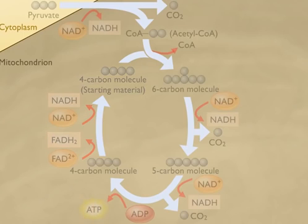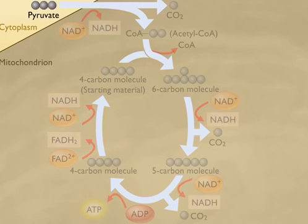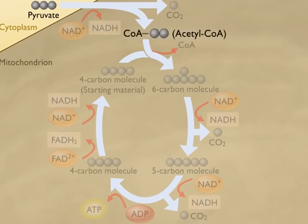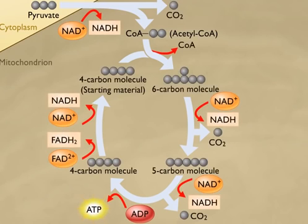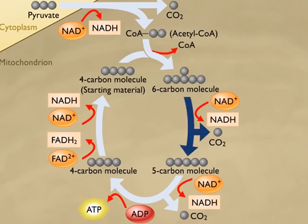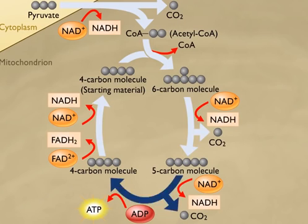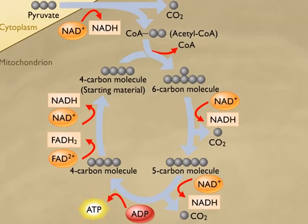Each glucose molecule is broken down into two pyruvate molecules during glycolysis. Then, each pyruvate is converted to acetyl CoA, which enters the Krebs cycle. Thus, for each glucose molecule, the Krebs cycle must complete two circuits to completely break down the two pyruvate molecules.